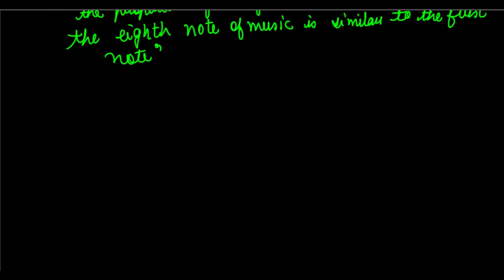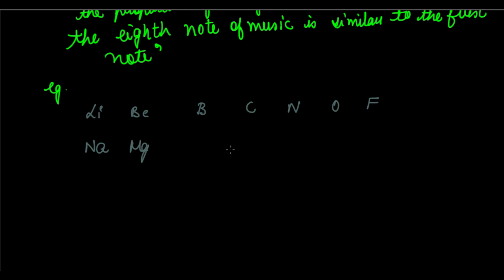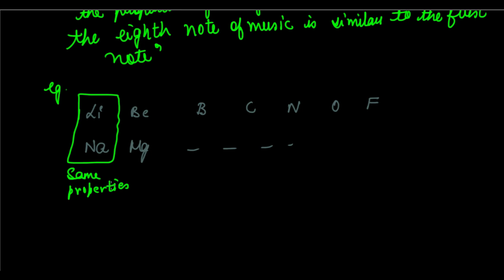Let's take an example with real elements. If you take lithium, beryllium, boron, carbon, nitrogen, oxygen, fluorine — at that time noble gases were not discovered, so we're not going to consider neon — and after fluorine we come to sodium, then magnesium, aluminium, and so on. You can see that lithium and sodium have the same properties. One example is they have the same number of valence electrons, that is one.